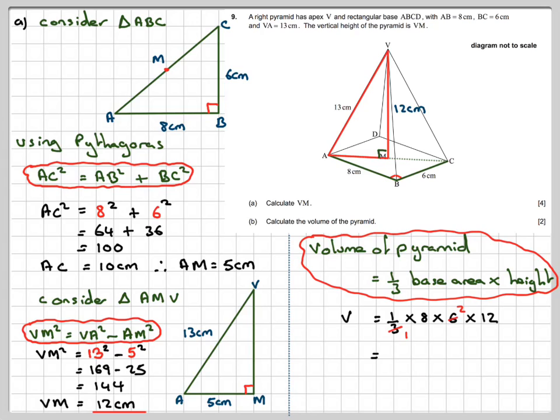The 3's will go into that once and into that twice, and therefore on my calculator it's going to give me 192 centimetres cubed.